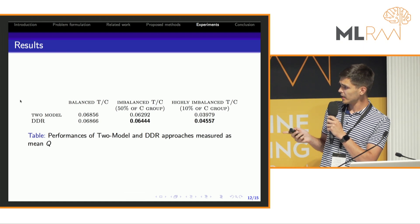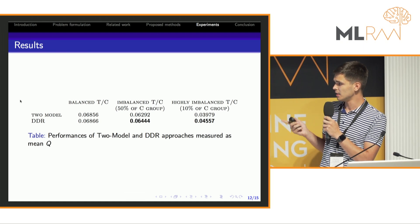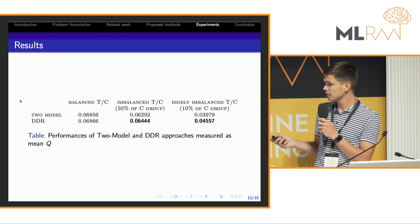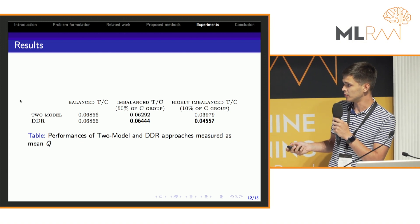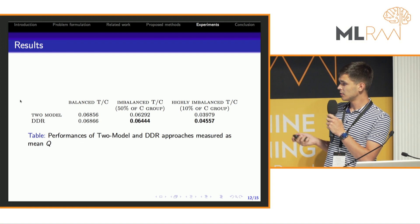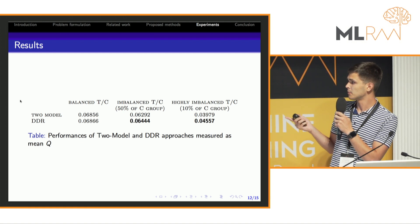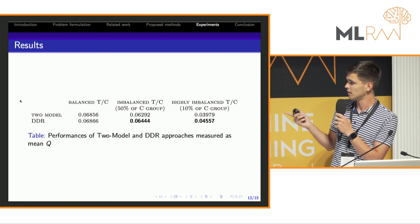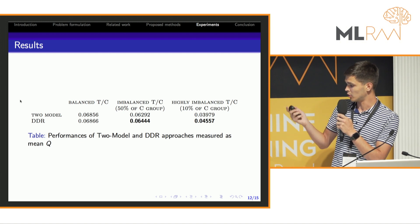Firstly, we compare two model methods and DDR, as the second is like an extension of the first. Here you can see that on imbalanced cases, DDR significantly outperforms the two model method.